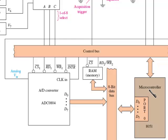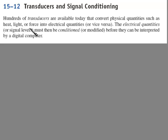So now let's spend a couple minutes looking at some of the transducers and signal conditioning that I was talking about in the previous section. Hundreds of transducers are available today that convert physical quantities, such as heat, light, or force, into electrical quantities. The electrical quantities, or signal levels, must then be conditioned or modified before they can be interpreted by a digital computer.